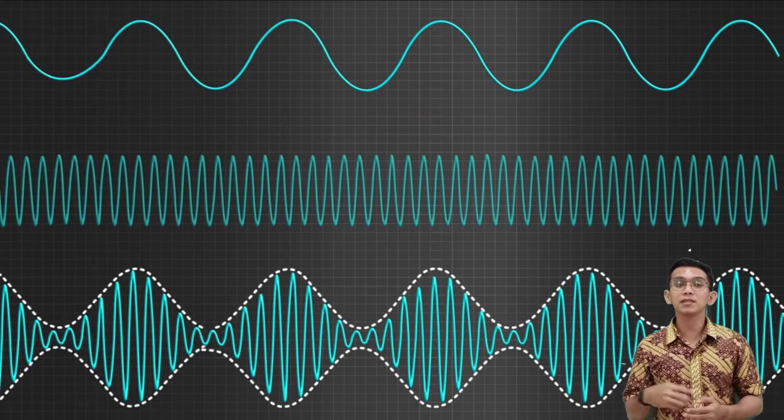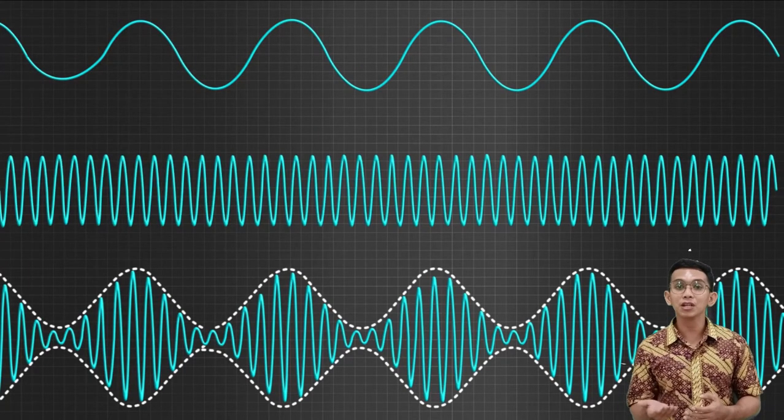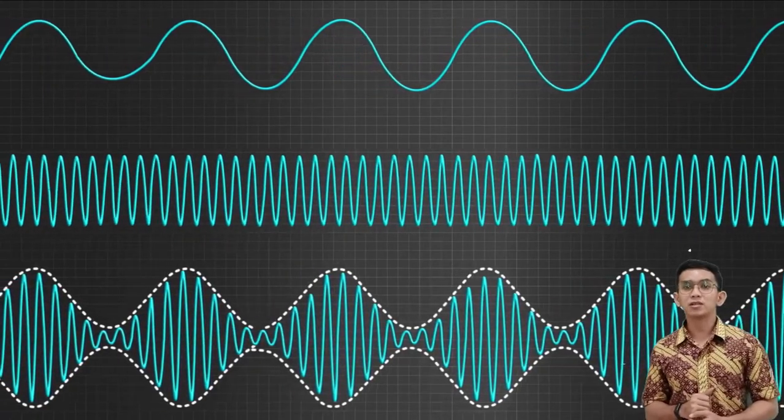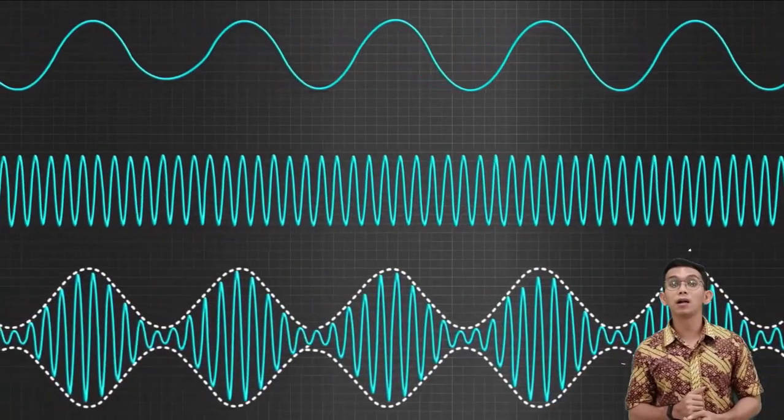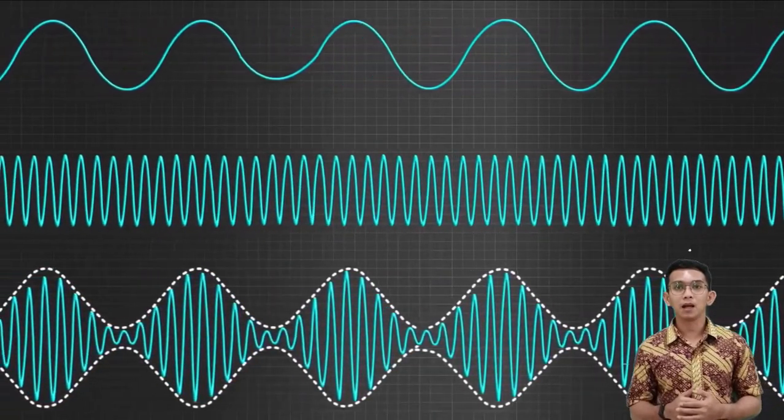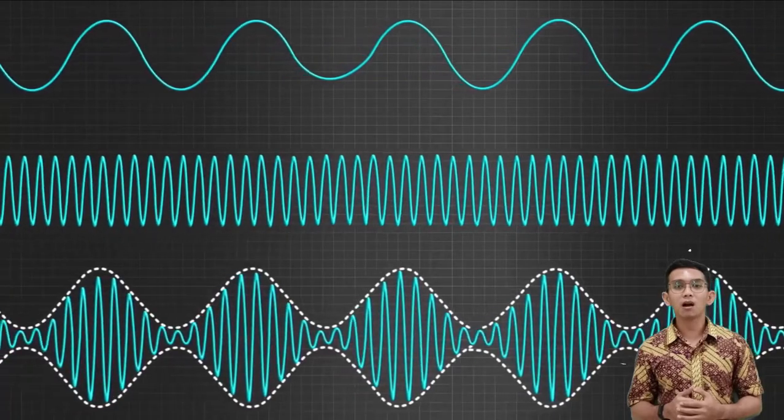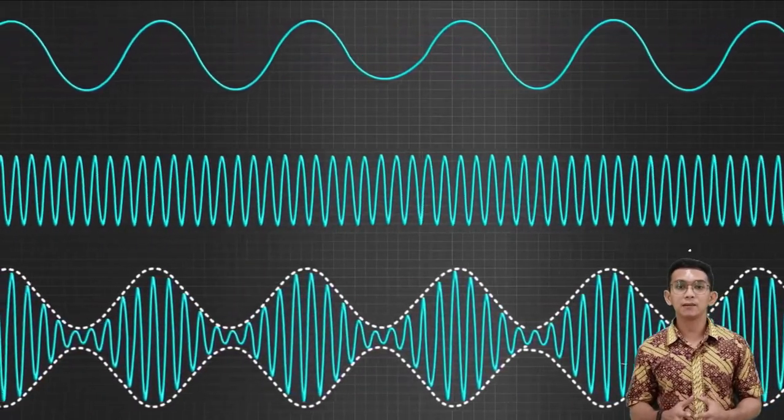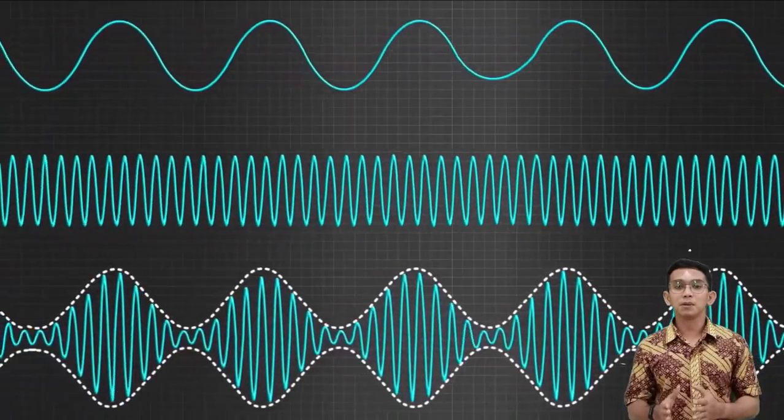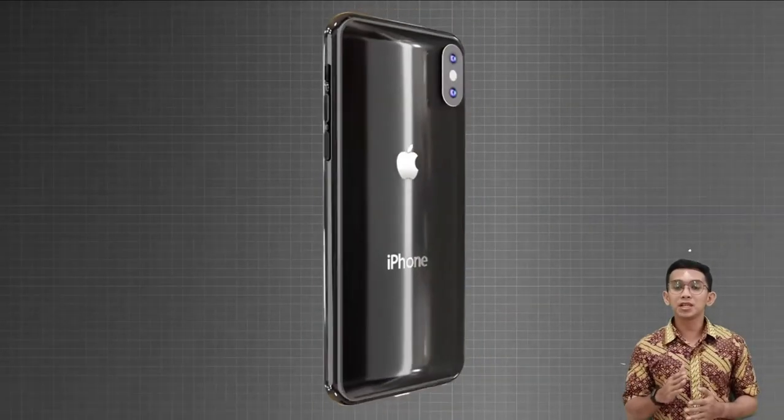Here, the amplitude of the carrier signal is varied based on the value of the message signal. The modulation techniques we've discussed so far have all been analog types. However, they are already obsolete.